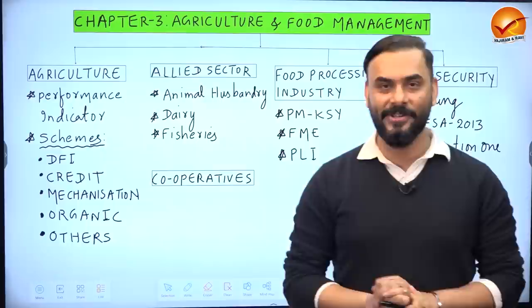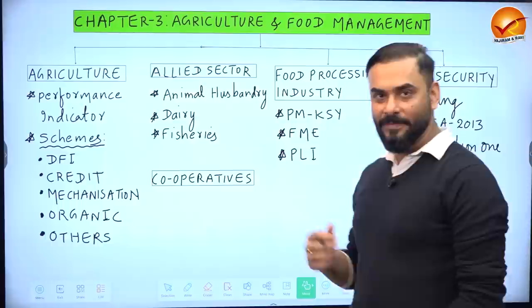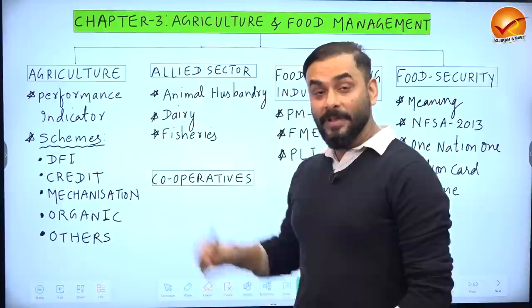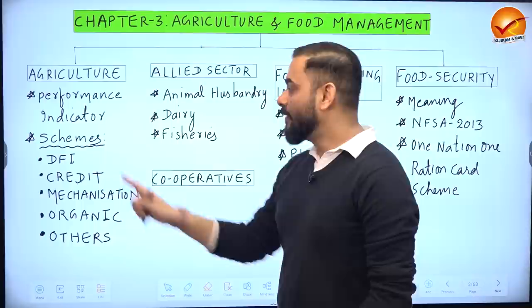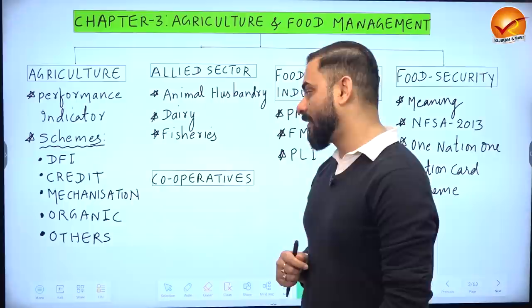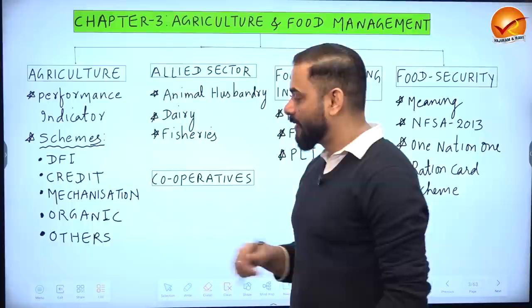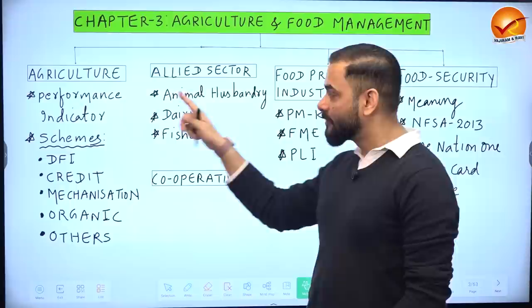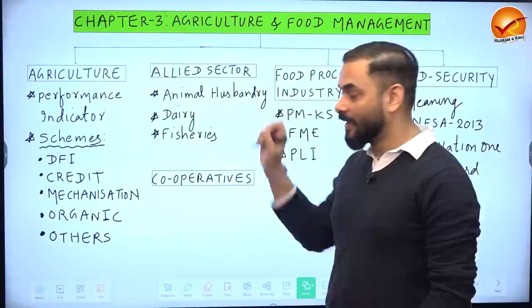Before diving in, let me outline how we'll divide Chapter 8 of the Economic Survey. The topic of agriculture and food management is divided into four parts. First, agriculture performance indicators; then schemes like Doubling Farmers' Income, credit flow, mechanization, and organic farming. Second, the allied sector — animal husbandry, dairy, fisheries — and their contribution to agriculture. Third, cooperative movements and changes in cooperatives policy.